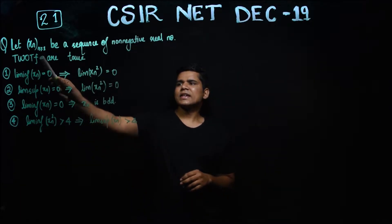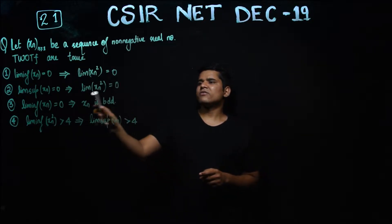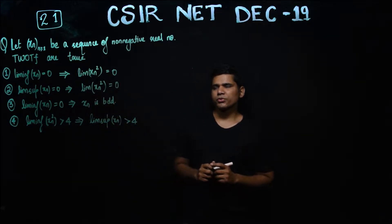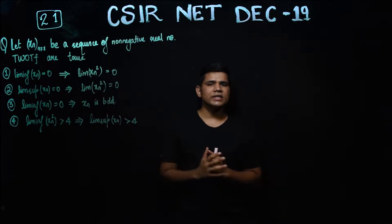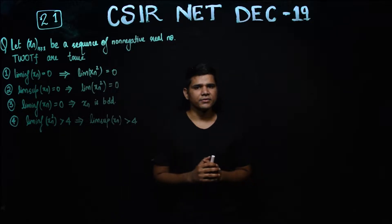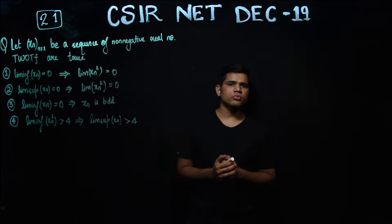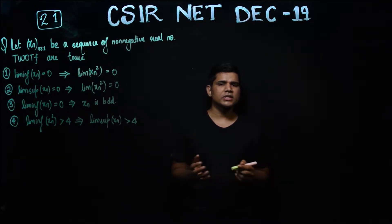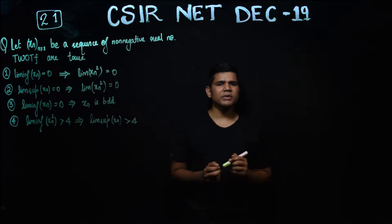The question says: let Xn be a sequence of non-negative real numbers — then which of the following are true? This question basically deals with limit inferior and limit superior of a sequence Xn which is non-negative. Since limit inferior and limit superior are quite fundamental topics in analysis, I am not going to define them.